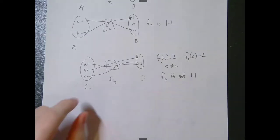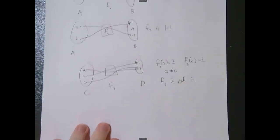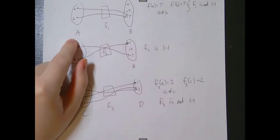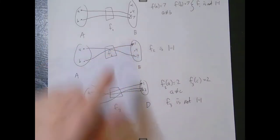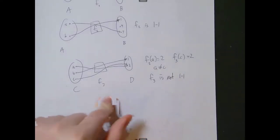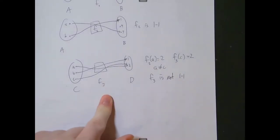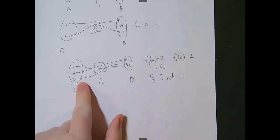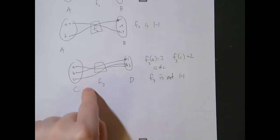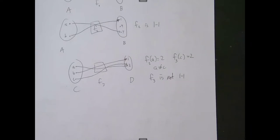To generalize: if a function is one-to-one, then the domain has to be less than or equal to the size of the codomain. If the domain is larger than the codomain, we cannot make a one-to-one function between them — we run out of unique outputs for every input.